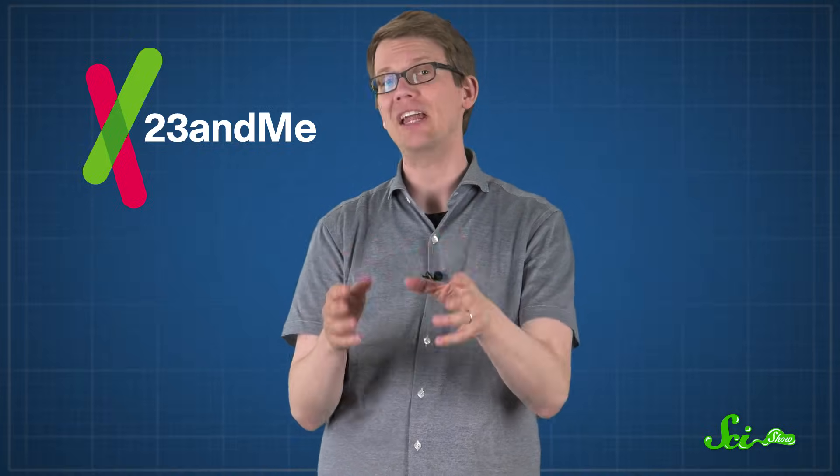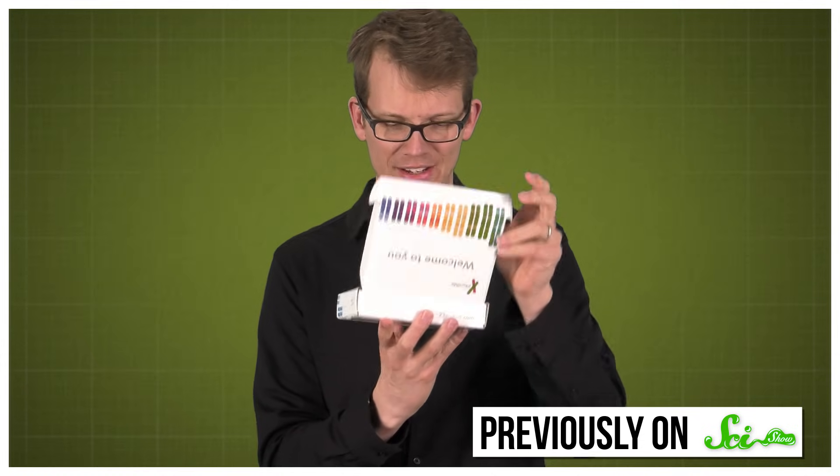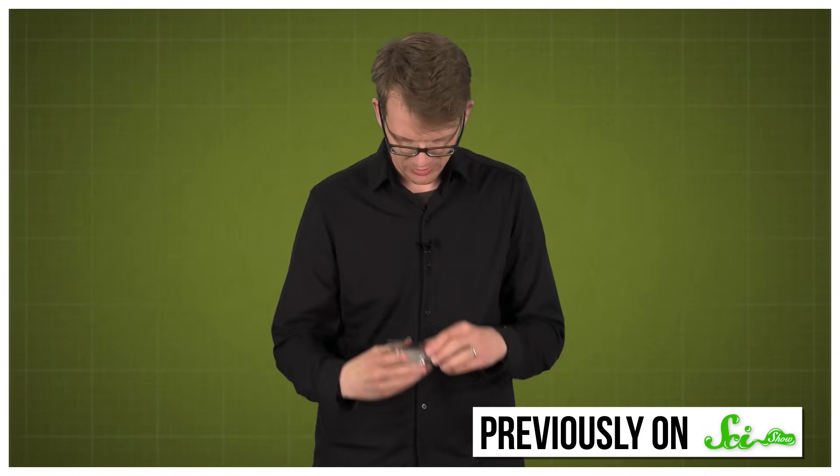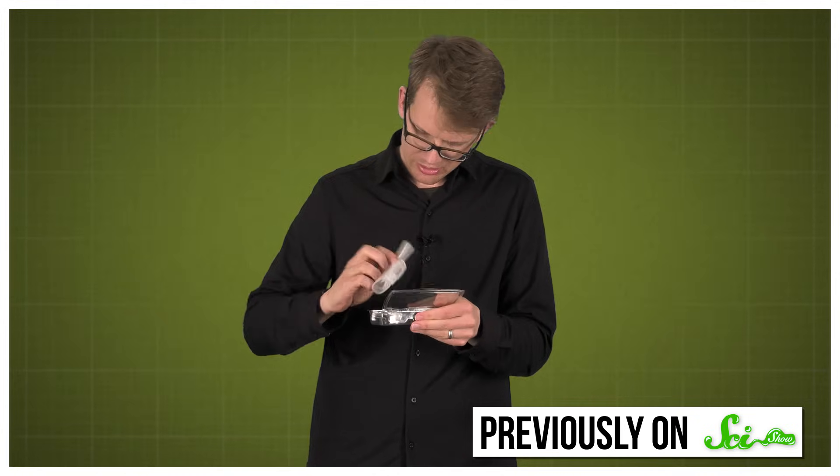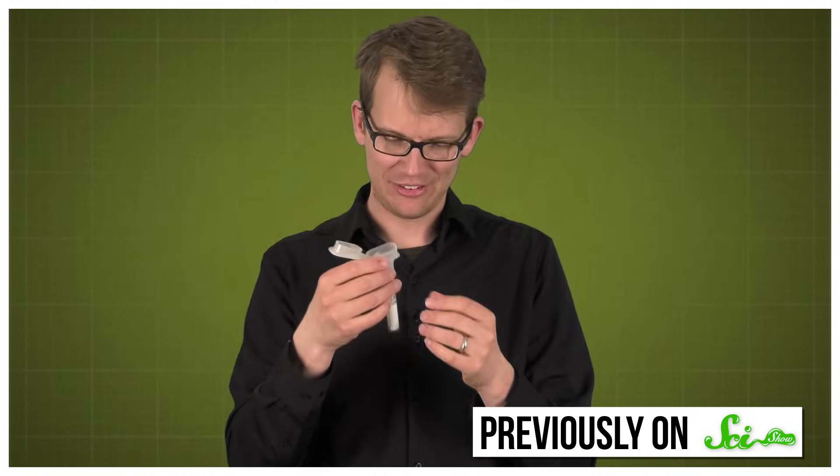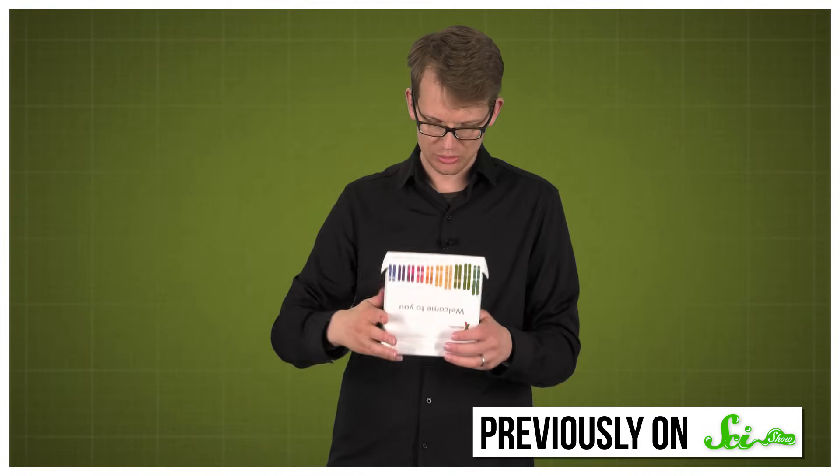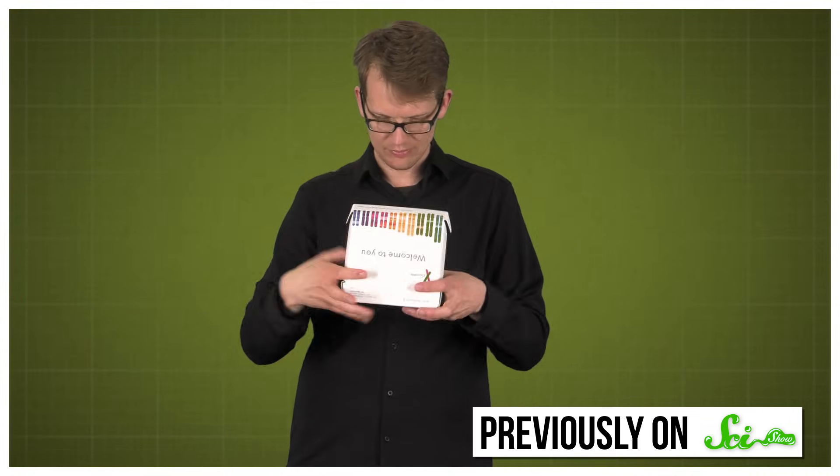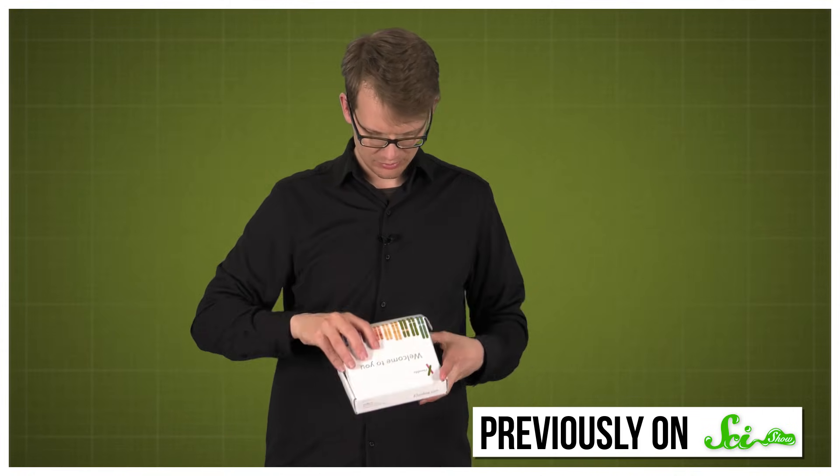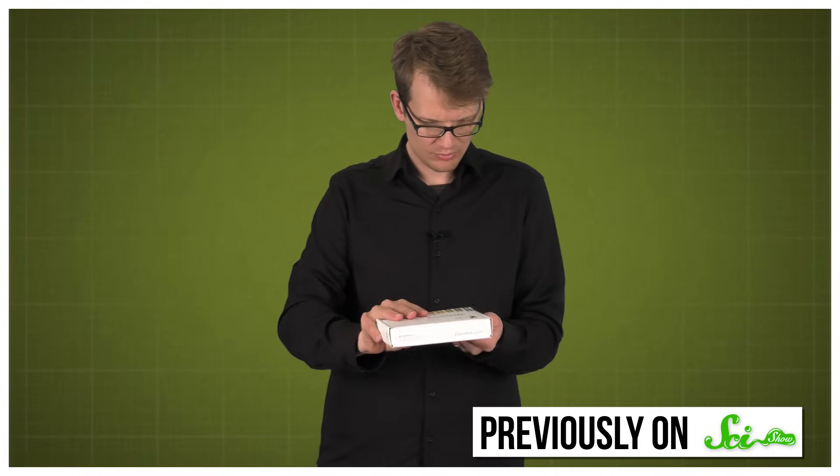This episode is brought to you by 23andMe, a personal genetic analysis company created to help people understand their DNA. The name 23andMe comes from the fact that human DNA is organized into 23 pairs of chromosomes. Through genetic analysis, 23andMe users can see which regions around the world their ancestors came from, and learn how their DNA influences facial features, and hair, and sense of taste, and smell, and sleep quality, and more.